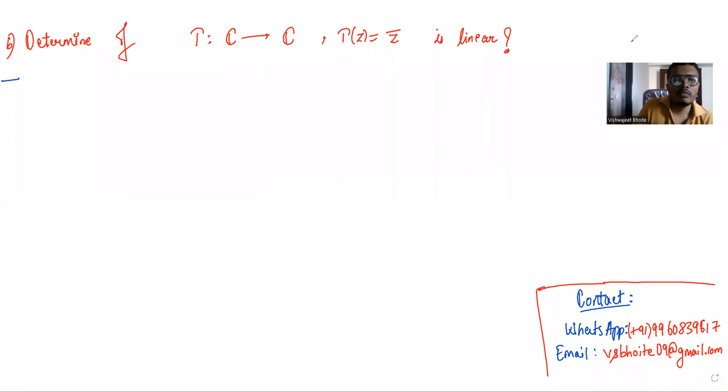We have to determine if T from complex numbers to complex numbers, given by T of z equals z bar, is linear.